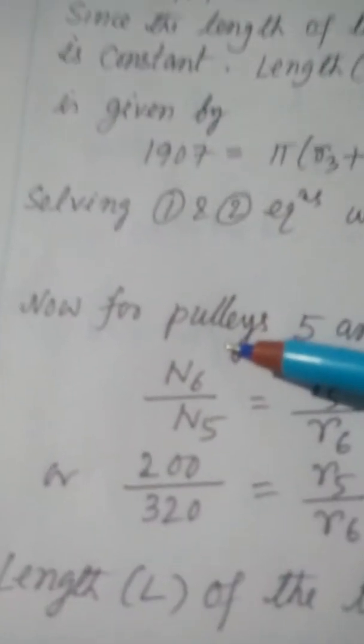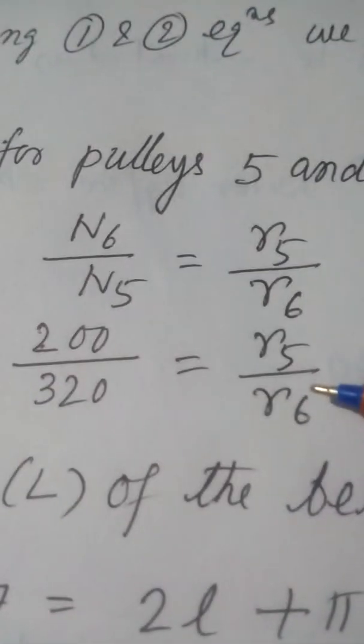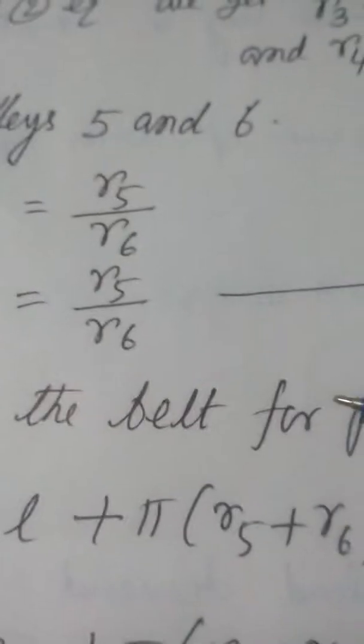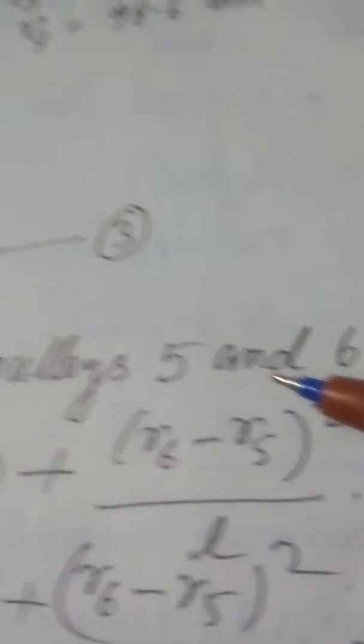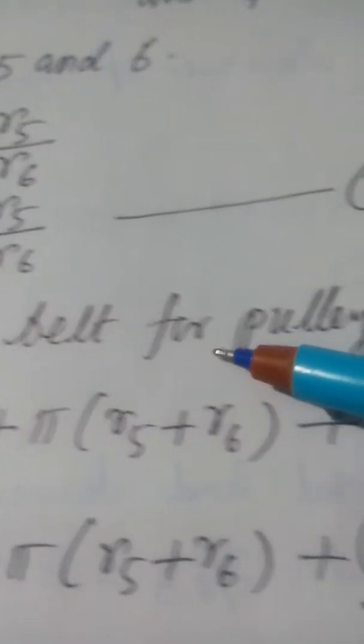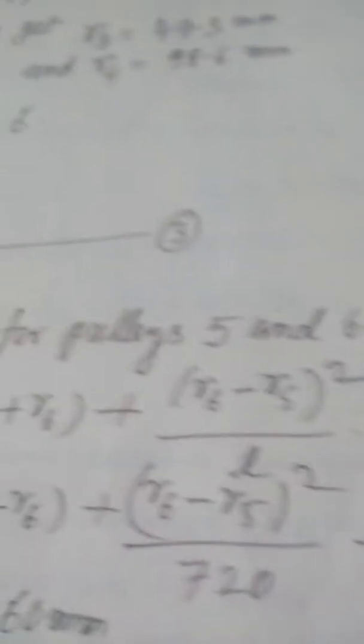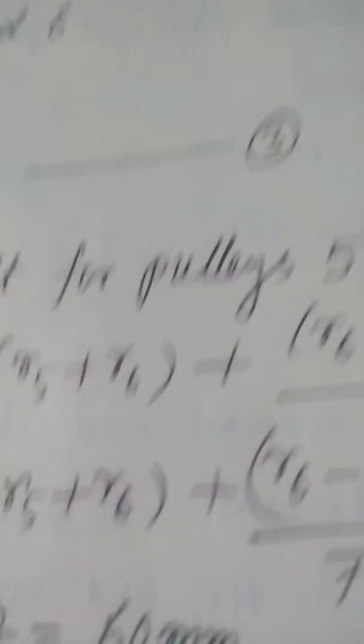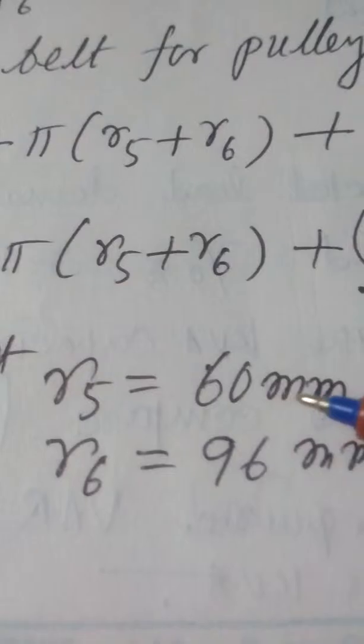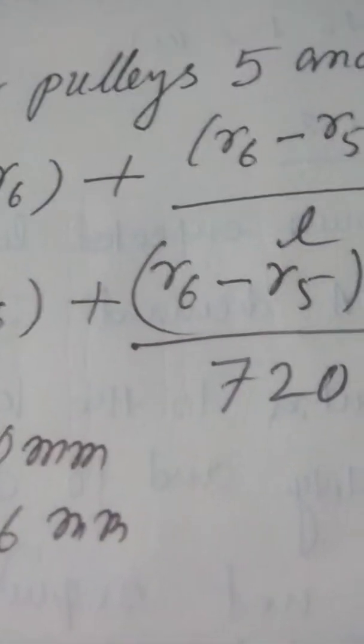For pulleys 5 and 6, applying the same speed ratio equation gives a relation between R5 and R6 — this is Equation 3. Similarly, the belt length for pulleys 5 and 6 is constant at 1907mm, giving Equation 4 involving R6 minus R5 over L. Solving Equations 3 and 4 gives R5 = 60mm and R6 = 96mm.